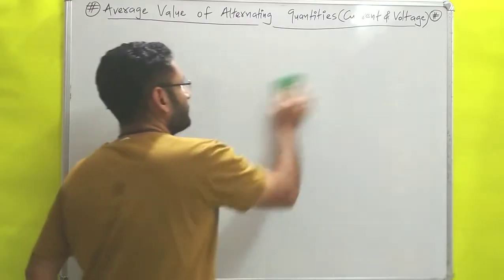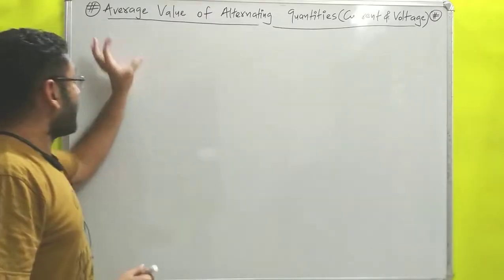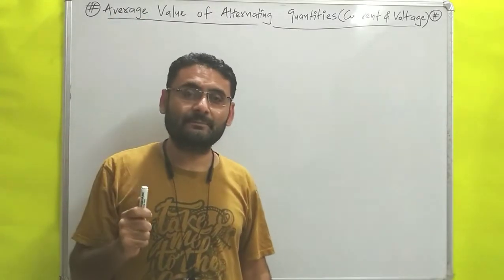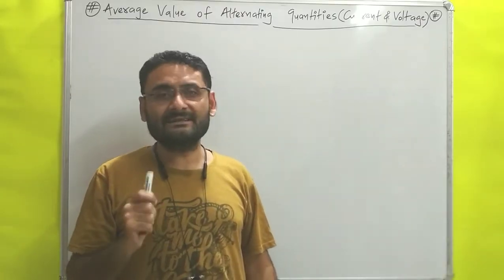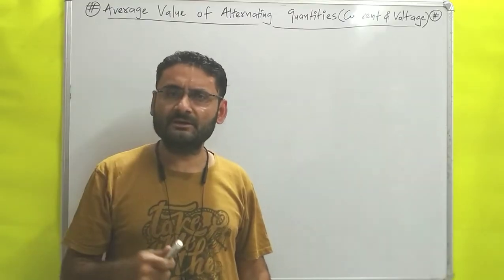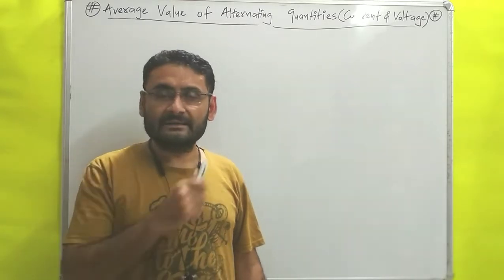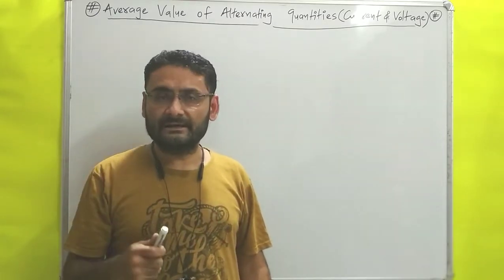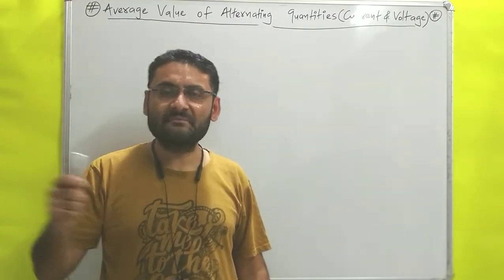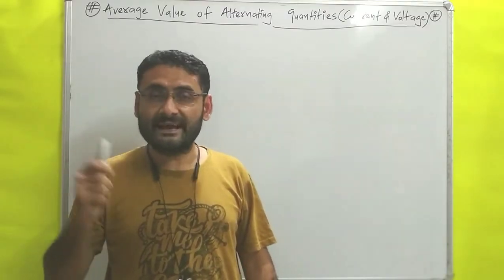First of all, a question may arise in your mind: why should we study the average value of current and average value of voltage? Because in the previous chapter on DC circuits we didn't discuss average value of current — we simply said 2 ampere current is coming from the battery. But here we need to study average value because this is alternating current. Alternating current means the value of current is changing as time passes, whereas in DC the value of current remains constant.